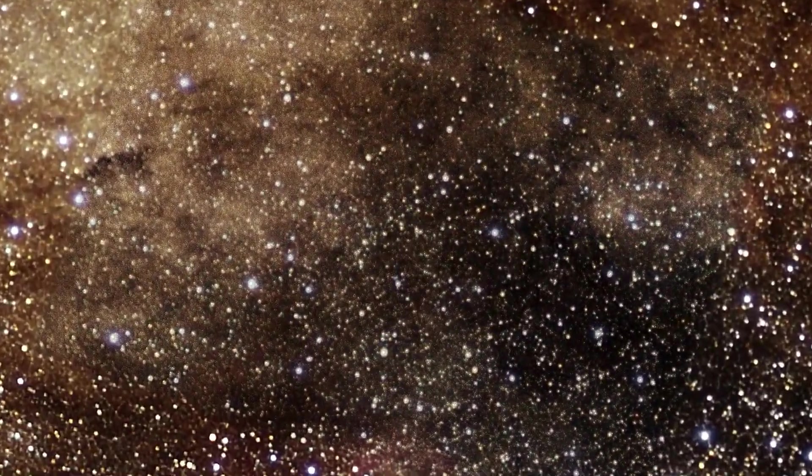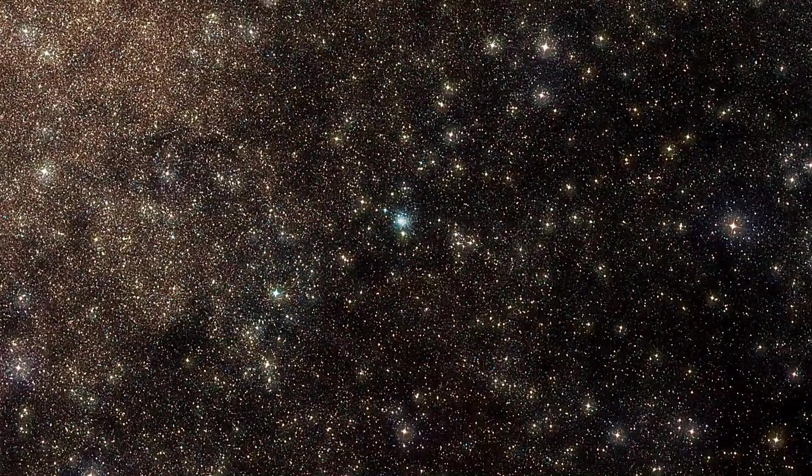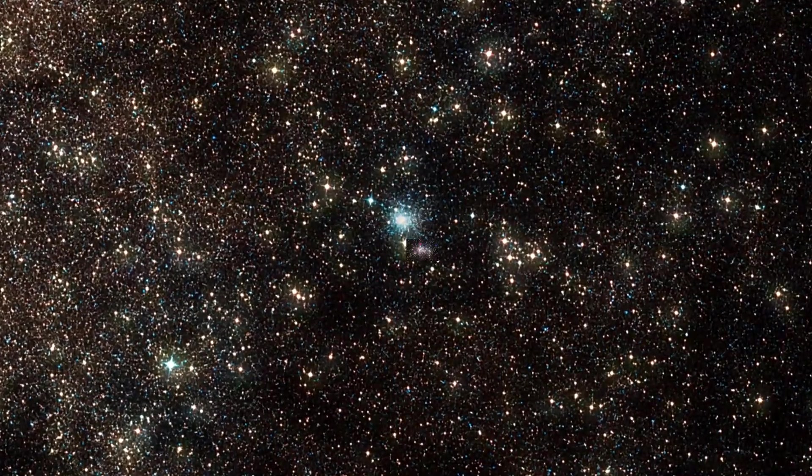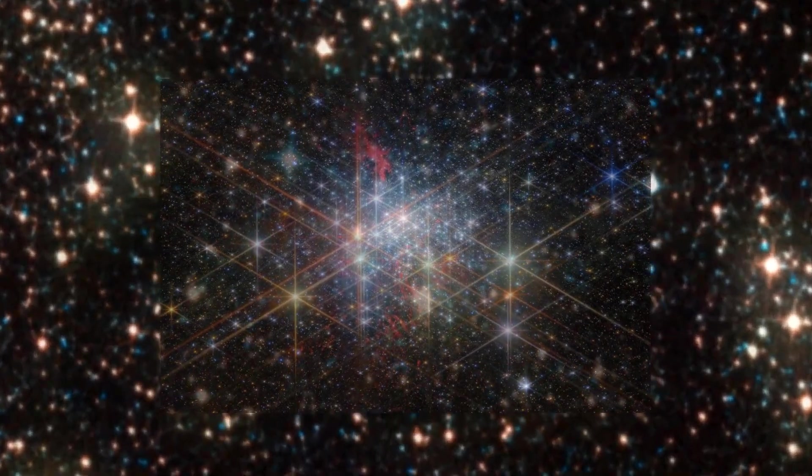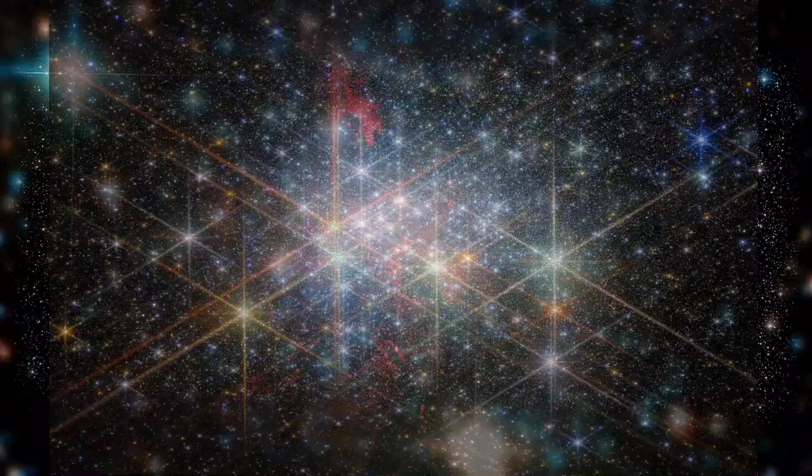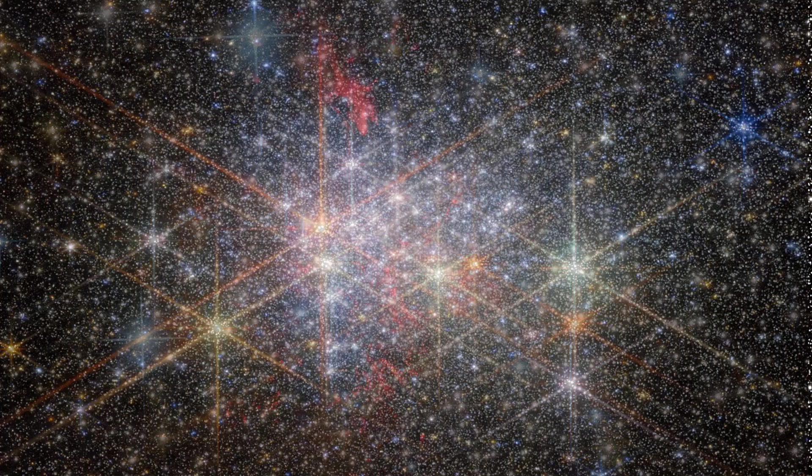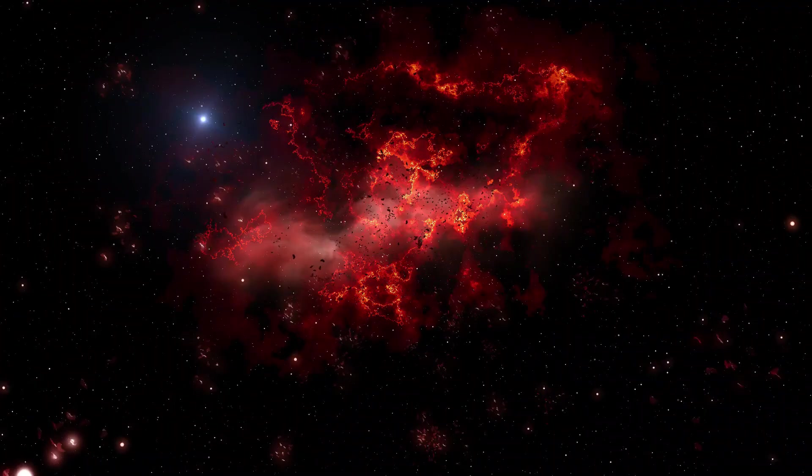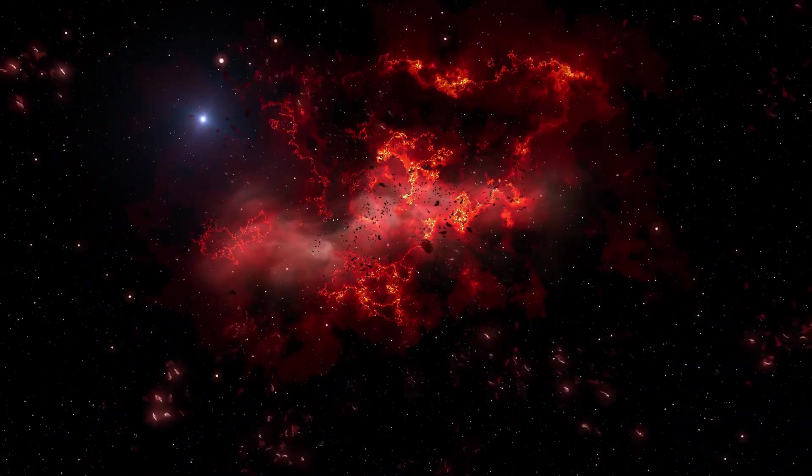As massive stars in Westerlund 1 age and explode as supernovae, the energy and material they release into space play a crucial role in the cluster's evolution. Over the next 40 million years, more than 1,500 supernovae are expected to occur within Westerlund 1, each explosion reshaping the cluster's environment. The immense force of these events sends shockwaves through the gas and dust, both disrupting the formation of new stars and driving away material that is not gravitationally bound to the cluster. As a result, only the tightly packed stars remain, gradually transforming Westerlund 1 into a more compact and cohesive globular cluster.